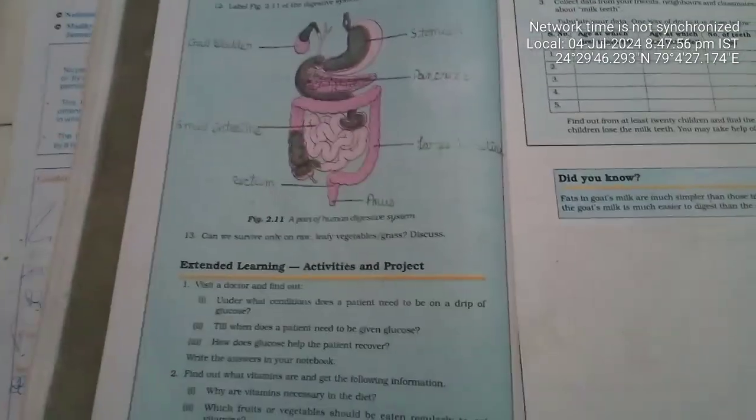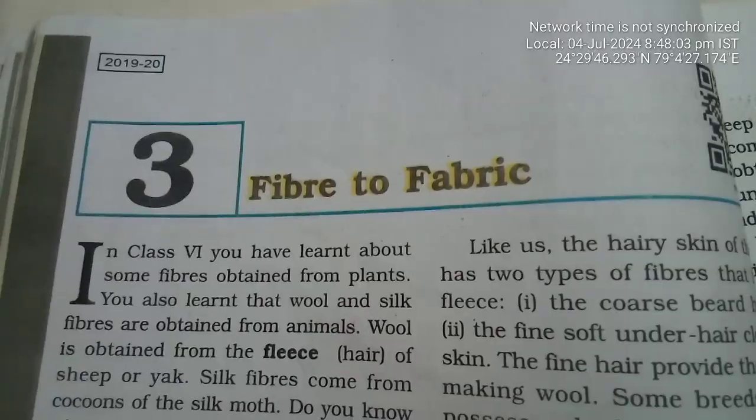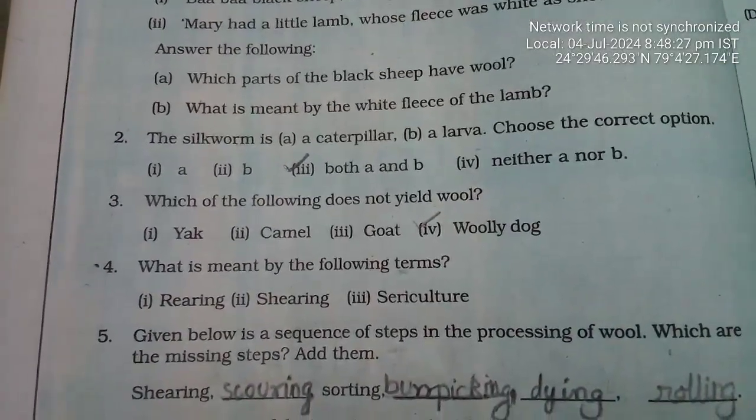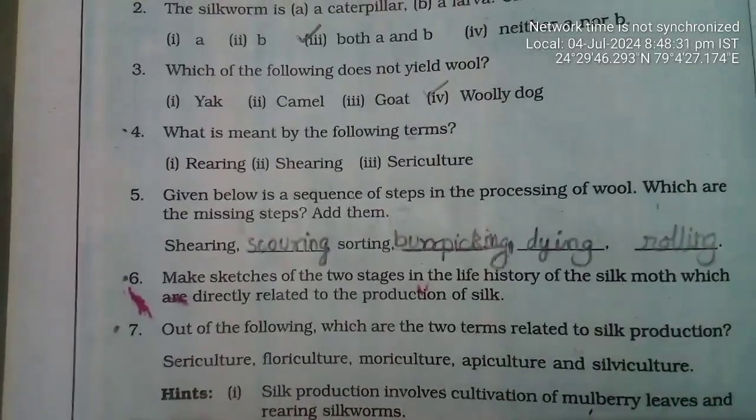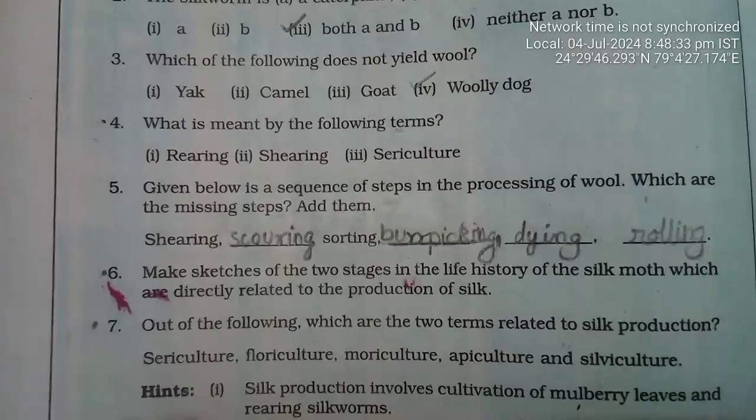Steps completed. Moving to Chapter 3: Fiber to Fabric. Bookwork - Question number 2, 3rd question about wooly dog, and 5th question about scouring.